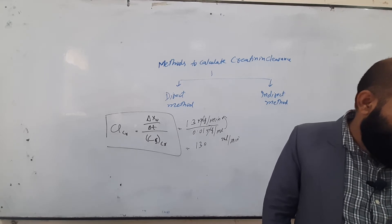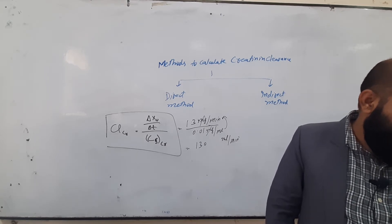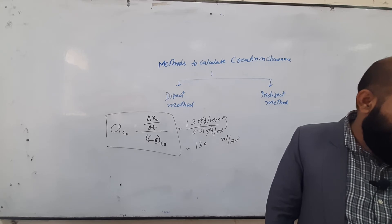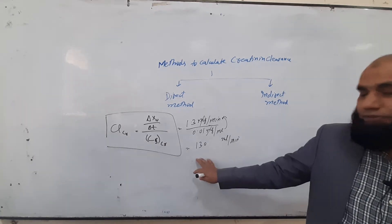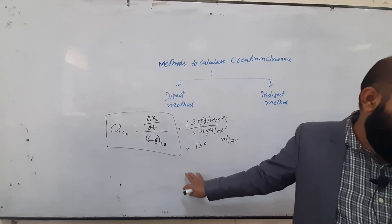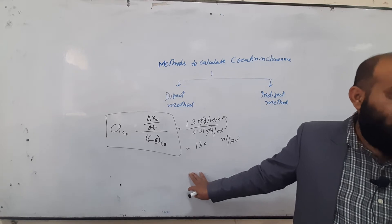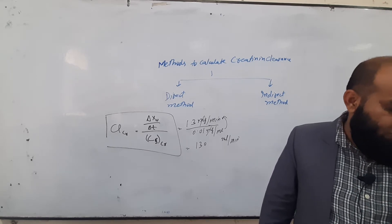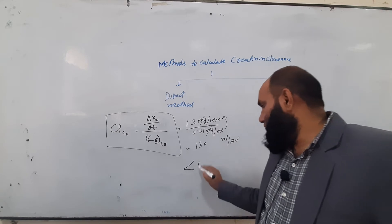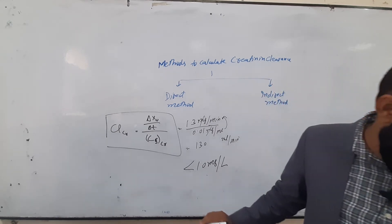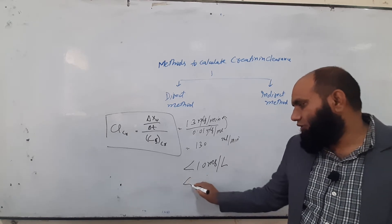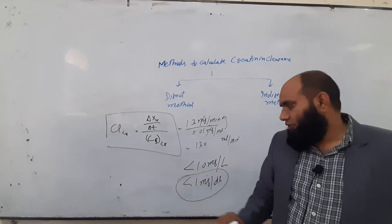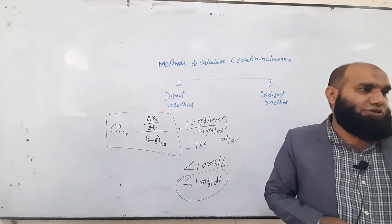The direct measurement technique is used for patients whose serum creatinine concentration is more than 1 milligram per deciliter, or more than 10 milligram per liter. If the serum creatinine is 1 milligram per deciliter, then this formula may be considered more accurate. Both the creatinine excretion rate and the average serum creatinine concentration must be obtained to measure creatinine clearance accurately.